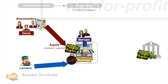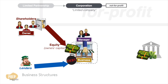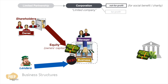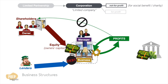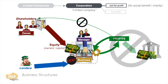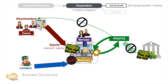Corporations can be not-for-profit or for-profit. The purpose of a not-for-profit corporation is to produce a particular social benefit or pursue a charitable goal on an ongoing basis. A non-profit corporation may generate profits, but must reinvest any profits towards its mission, rather than distributing them to owners. Non-profit corporations are usually not taxed.